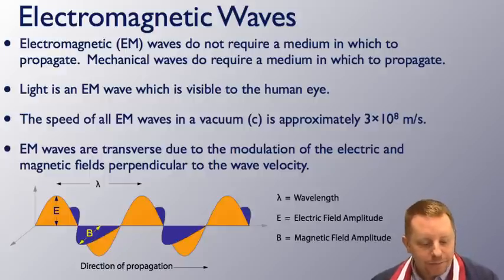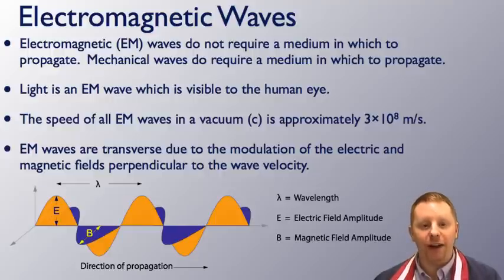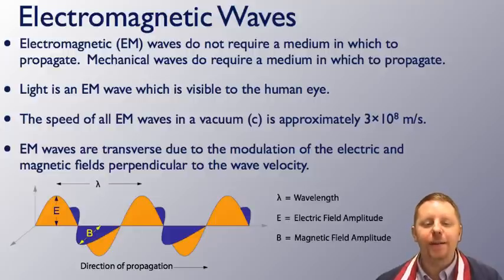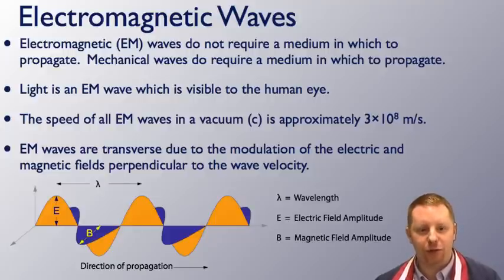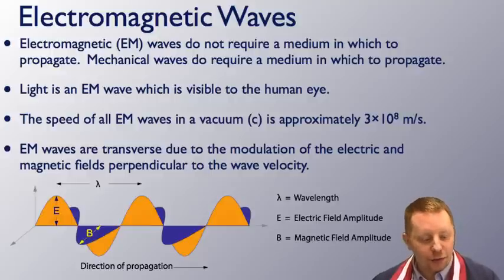Let's start by taking a look at electromagnetic waves. EM waves don't require a medium to travel through. Remember mechanical waves you have to have a medium—air, steel, water, some sort of matter for them to travel through. Electromagnetic waves, no medium required. They can go through a vacuum.